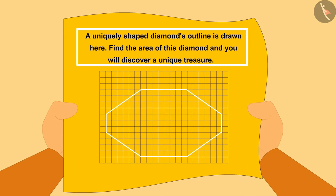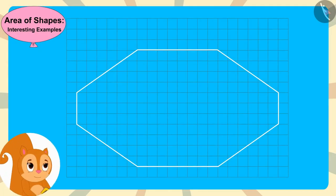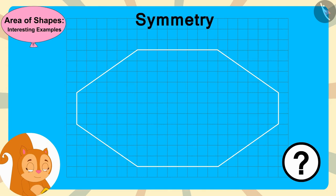Then a new puzzle appeared on the paper. A uniquely shaped diamond's outline is drawn here — find the area of this diamond and you will discover a unique treasure. Chanda read the message and started looking for the answer. Children, can you also find the answer to this puzzle using the concept of symmetry that Chanda has adopted?